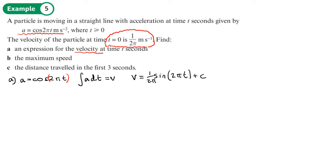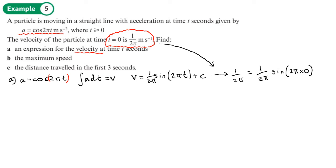To find c, we use the initial condition: when t = 0, v = 1/(2π). Substituting in gives 1/(2π) = sine(2π × 0)/(2π) + c. Sine(0) = 0, so c = 1/(2π).